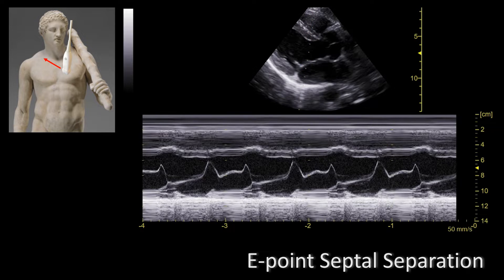Let's identify the structures. Starting from the top, you first come across the right ventricle, and that corresponds to this cavity over here in your M-mode tracing. Then you have the septum and you have the left ventricular cavity. In the middle of the left ventricular cavity you have the mitral valve leaflets.